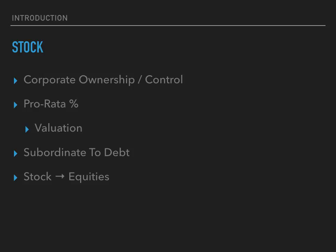We learned about the double accounting method and the fundamental equation in our previous module. The fundamental equation is that assets equal liabilities plus equities. Liabilities are things like debts, and equities reflect stock. So when you sell stock, you make two entries in our double-entry accounting method: we add to the equity side of the table, and we also add to the asset side of the table, because when we sell stock we receive an asset — cash.